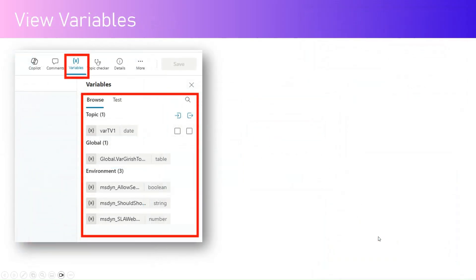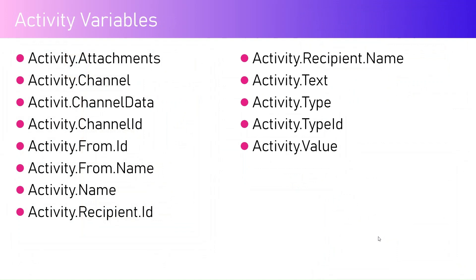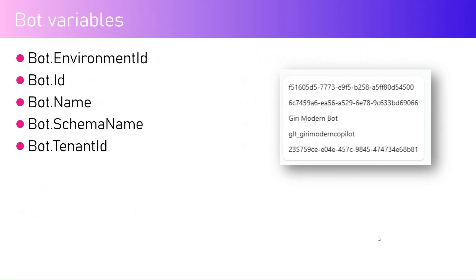If you want a floating type, you use the Power FX function 'Float'. From a viewing variable perspective, if you go into any specific Copilot and click on variables for a specific topic, you will see all topic variables, global variables, and environment variables. There are different out-of-the-box variables available. There is an 'activity' variable — if you want to track information about an activity such as activity type, text, recipient name, channel ID, or attachments, you can use this variable.